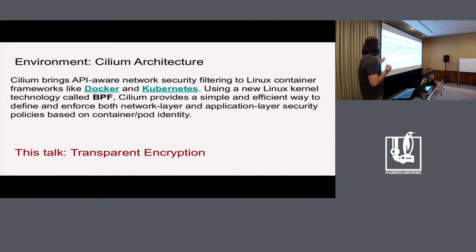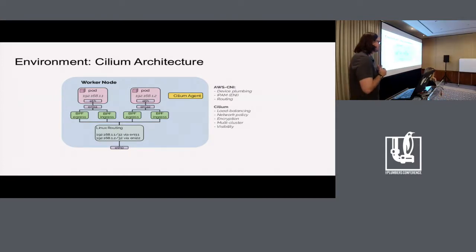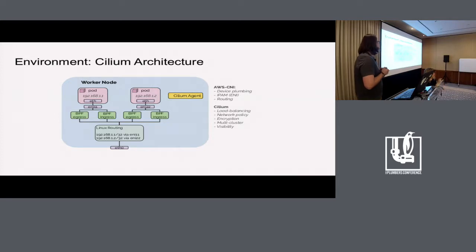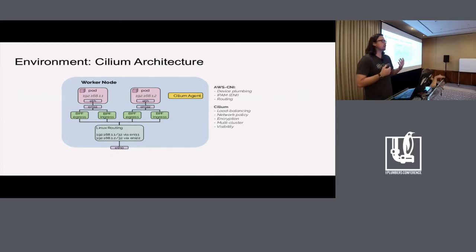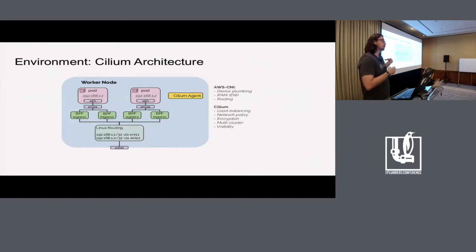Cilium is a CNI that works with Kubernetes or Docker and leverages BPF for all of its policies. In this talk, we're focusing primarily on transparent encryption, not policy or load balancing. On every worker node we run the Cilium agent. Each pod has a VETH or IPVLAN device into the host networking space. We run BPF programs on ingress and egress of each pod where we apply policy — and in this context, one of those policies is encryption. There's also a tunnel mode supporting VXLAN and Geneve, but most of this talk will refer to native routing mode using the host networking's routing table.